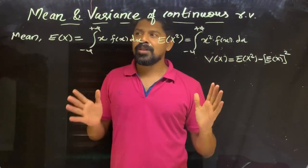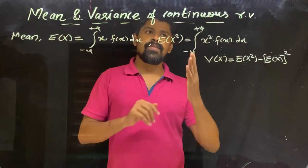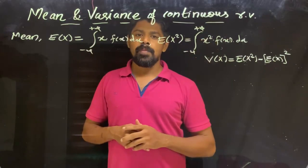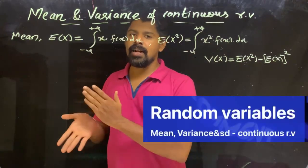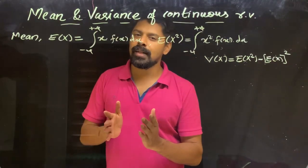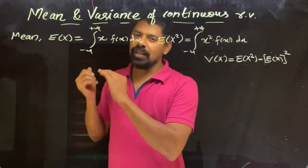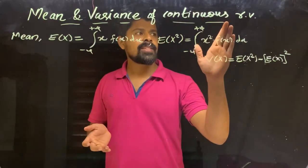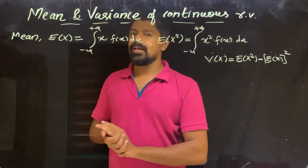This is the mean and variance of continuous random variables. We are learning continuous random variables, which are more useful than discrete random variables.